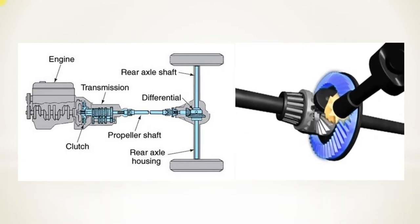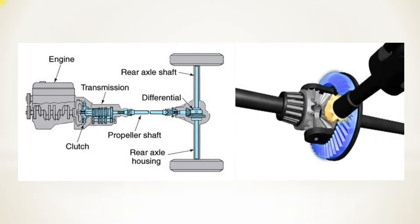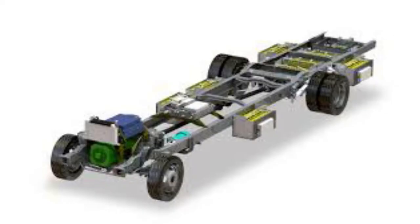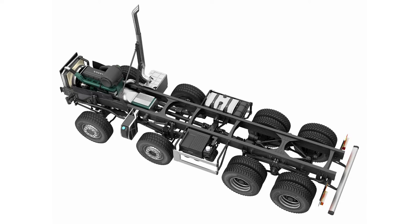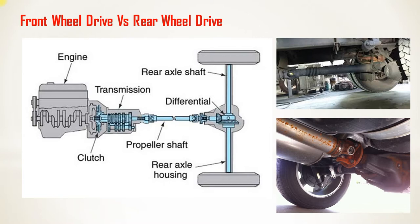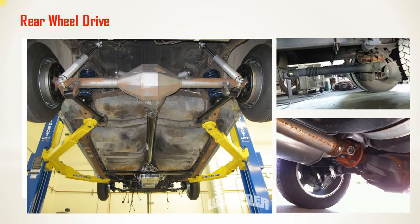The advantages of this layout: the weight distribution is reasonably balanced between the front and rear wheels, which gives good handling characteristics. Due to the engine and radiator being at the front, they take full benefit of the natural air streams created by vehicle movement, reducing power losses for a larger fan. However, during braking, the weight of the vehicle shifts to the front wheels and weight on the rear wheels decreases, resulting in decreased braking effort.